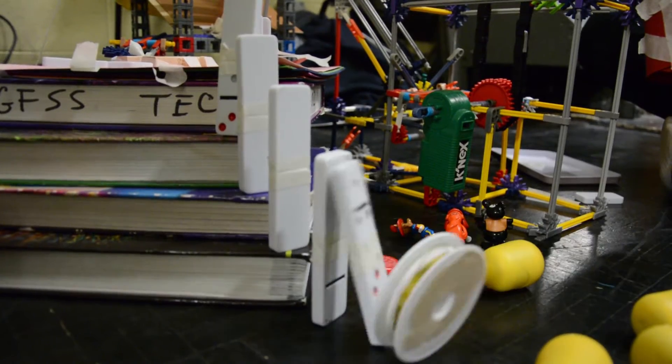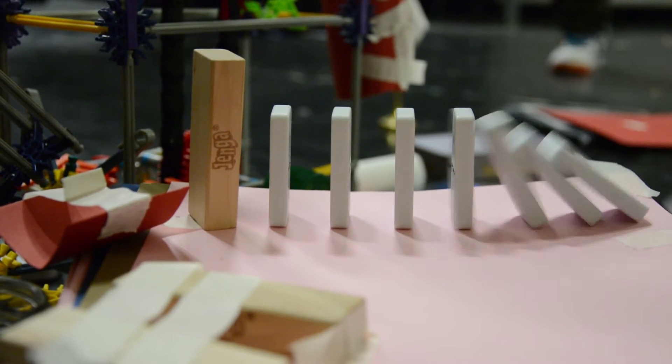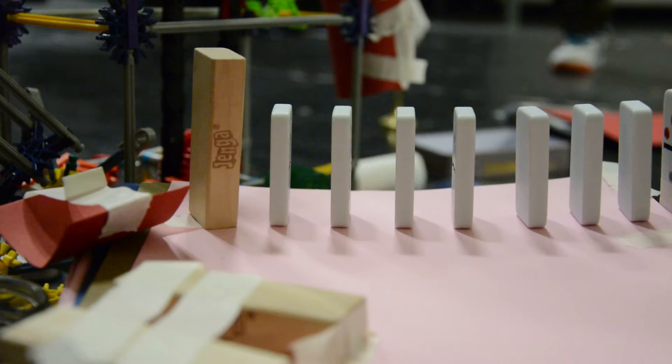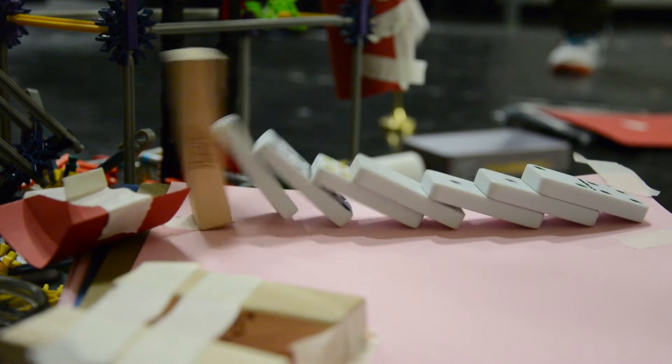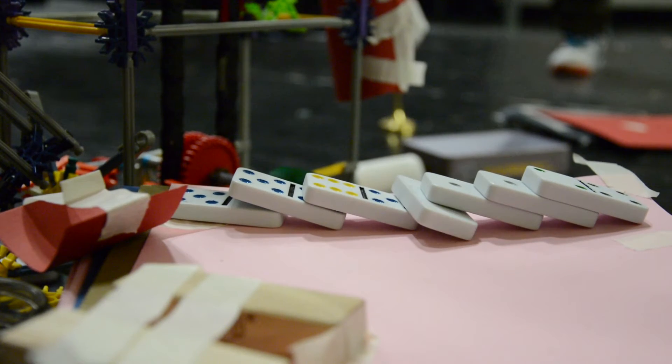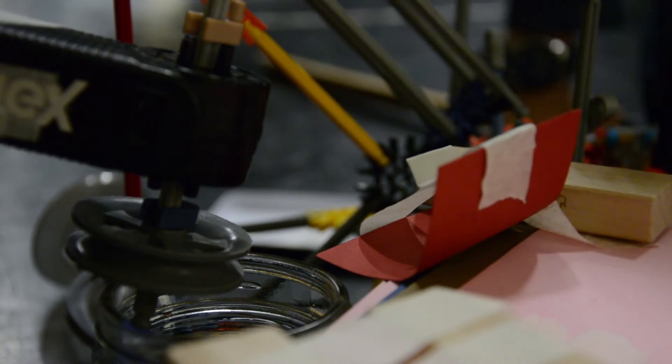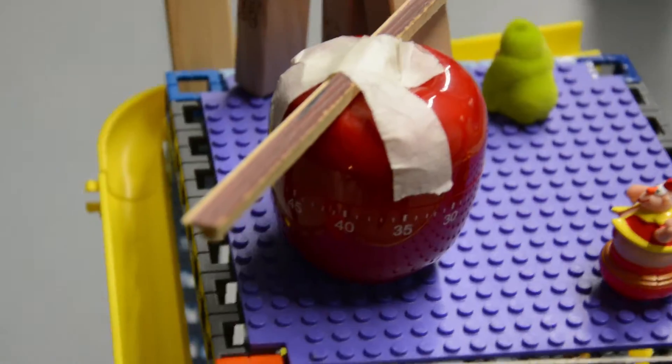The dominoes travel the length of the machine, eventually knocking over a marble. The marble falls into the jar, getting stirred around by the spoon as mechanical energy continues to be released.